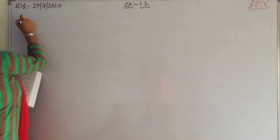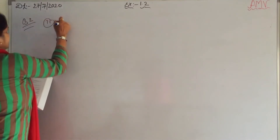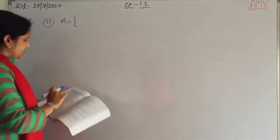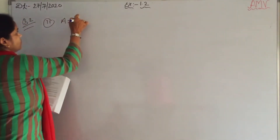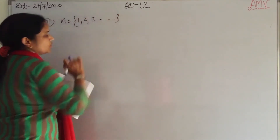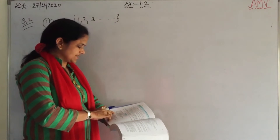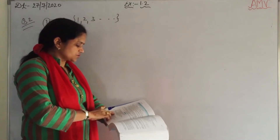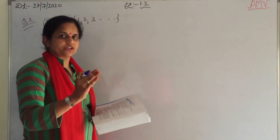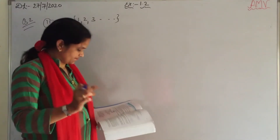Second: the set {1, 2, 3, and so on}. There are infinitely many numbers in this set. So it is an infinite set.